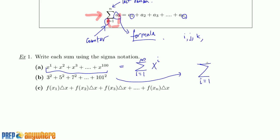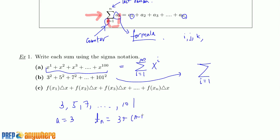For the next one, we count from one. How high do we need to go? We can find this from knowledge of sequences and series. The pattern is 3, 5, 7, going all the way up to 101 — this is an arithmetic sequence. The general term formula is a₁ plus (m−1) times the common difference, which is 2, giving us 2m + 1. So our aᵢ will be 2i + 1.